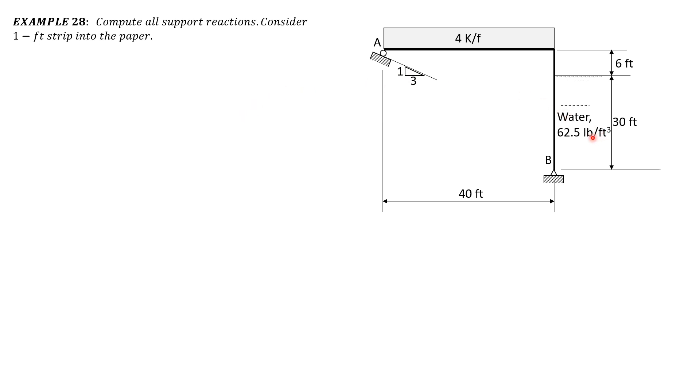Given the specific weight of water, 62.5 pounds per cubic foot. From fluid mechanics we learned that the pressure distribution is triangular and the pressure at B is equal to specific weight of water times the depth which is 30. So we have here the normal reaction at A with a slope of the original surface is one vertical to three horizontal.